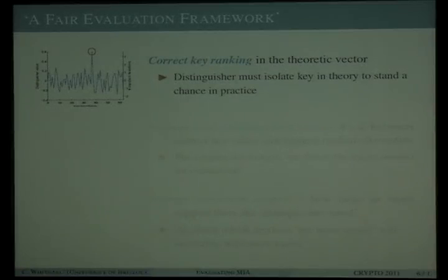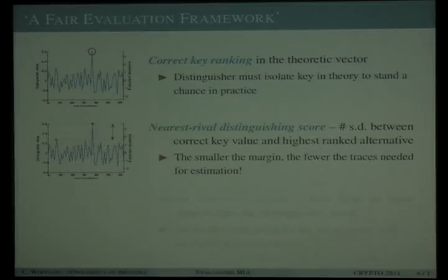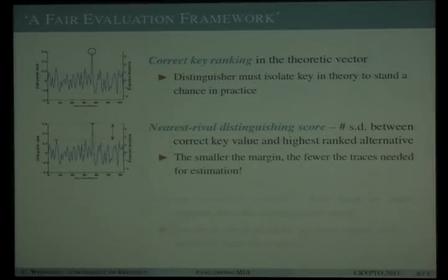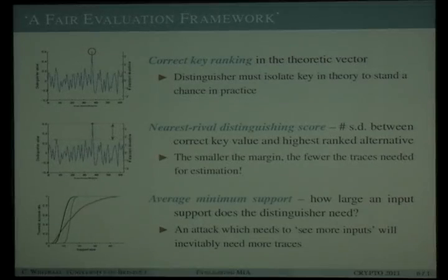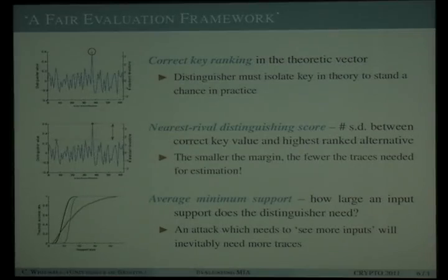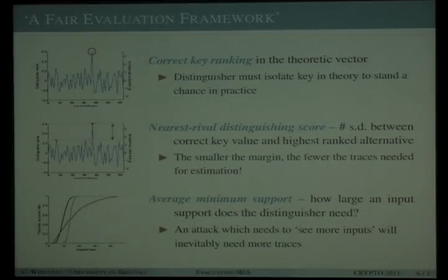For an attack to stand a greater than random chance of isolating the correct key in practice, it must be able to isolate it in theory. The second feature is a standardized measure of the distance between the correct key value and the nearest rival — the larger this distance, the more likely it is to emerge from an imprecise estimate, decreasing the number of traces needed. The third measure relates to the distinguisher's sensitivity to limited information: how large a subset of the total input support space is needed for the theoretic vector to isolate the true key.